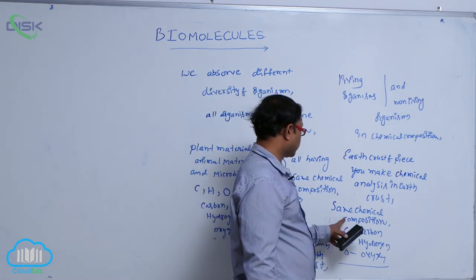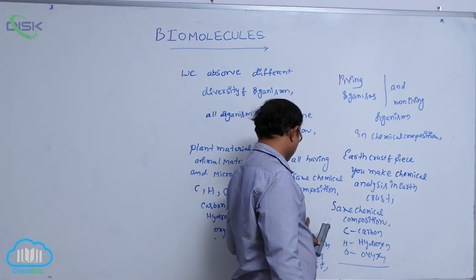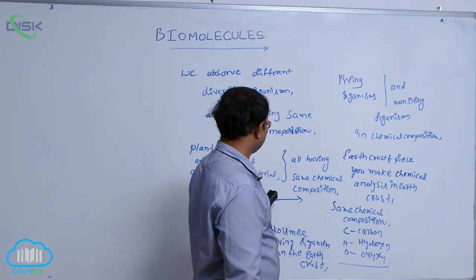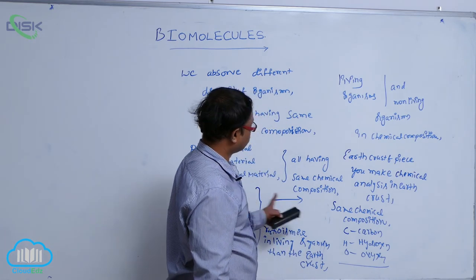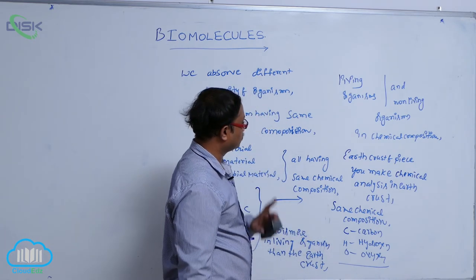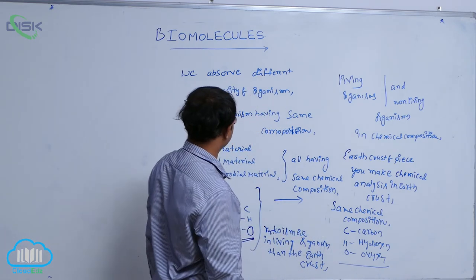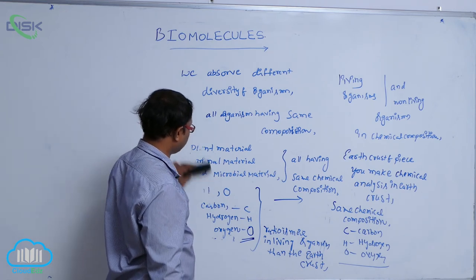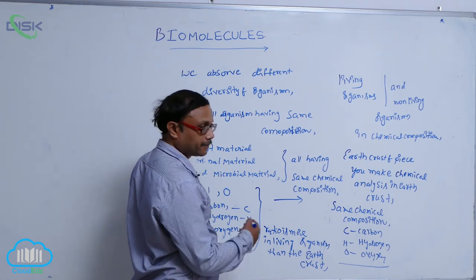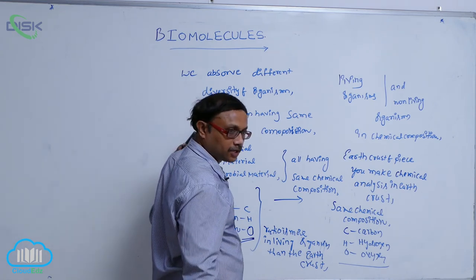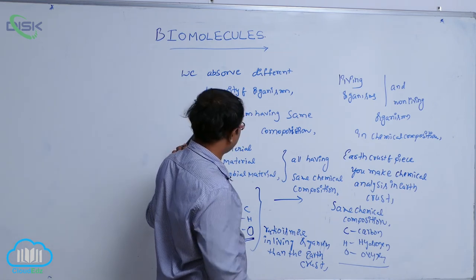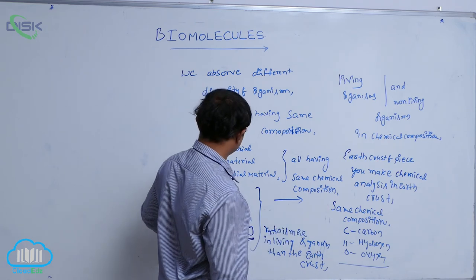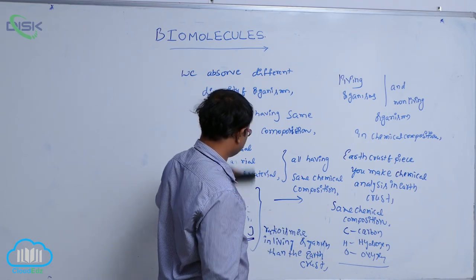Related to that, the ratio of other elements is also more in living organisms than in non-living organisms. So that is the difference between the chemical composition of living organisms and non-living organisms.